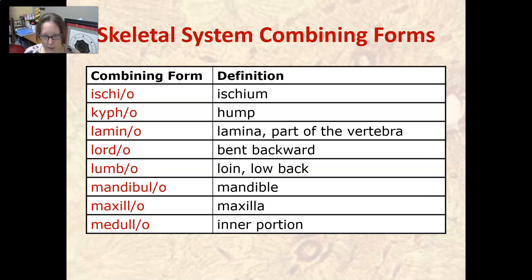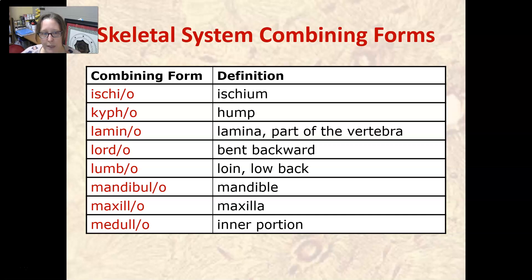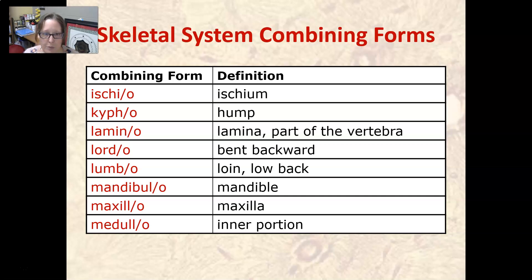Ischio means ischium, which is also part of your hip bone. Kypho means hump — think humpback. Lamino refers to the lamina, which is part of a vertebra. It's the part that can be removed in a laminectomy to carve out more room for nerves or the spinal cord.